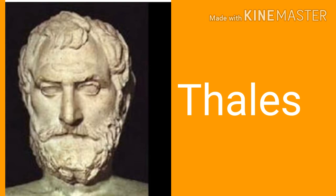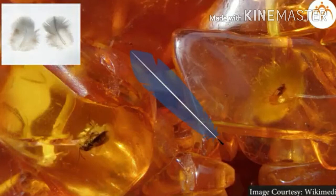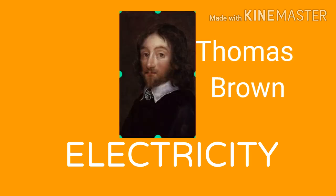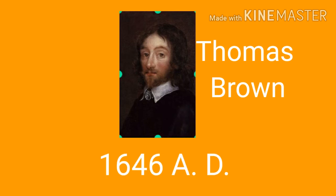About 2500 years ago, a Greek scientist named Thales found that feathers are attracted towards a rod of yellow-colored amber which had been rubbed against a woolen cloth. Amber is called 'electron' in the Greek language. Therefore, this property of amber to attract things was named electricity by the scientist Thomas Brown in the year 1646 AD.